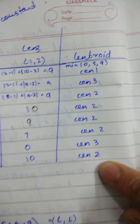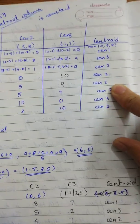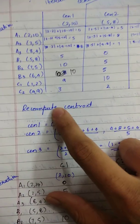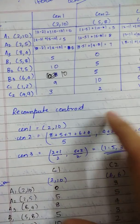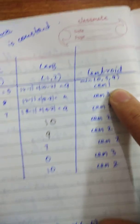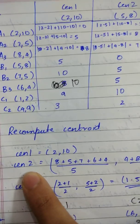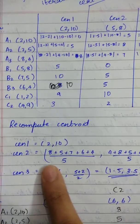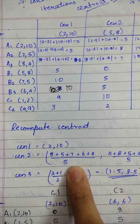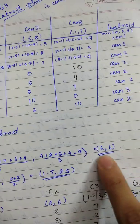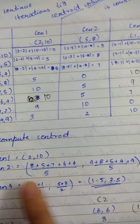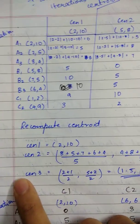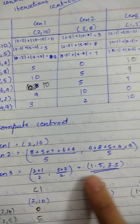After doing this for all eight points, the last column shows the minimums: centroid one once, centroid three twice, and centroid two five times. To recompute the centroids, take the average of all points assigned to each centroid. For centroid two's five points: average the x-coordinates (8+5+7+6+4)/5 and similarly for y-coordinates. The new centroid two becomes (6, 6) instead of (5, 8). Do the same for centroid three.